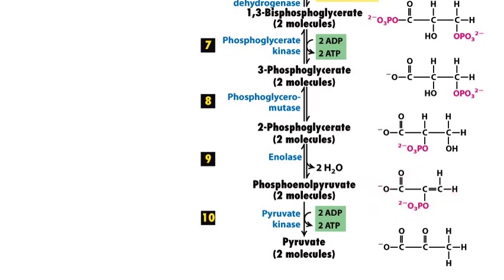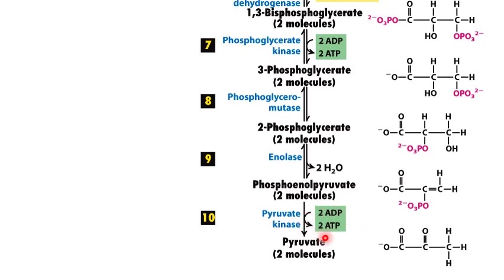In step number 10, the PEP is an unstable molecule so it loses one of its phosphate groups in this step. The lost phosphate group gets transferred to ADP under the influence of the enzyme called pyruvate kinase. This will yield 2 molecules of pyruvate and 2 molecules of ATP in the end. As this pyruvate enters into the next phase of cellular respiration, it is considered the end product of glycolysis.